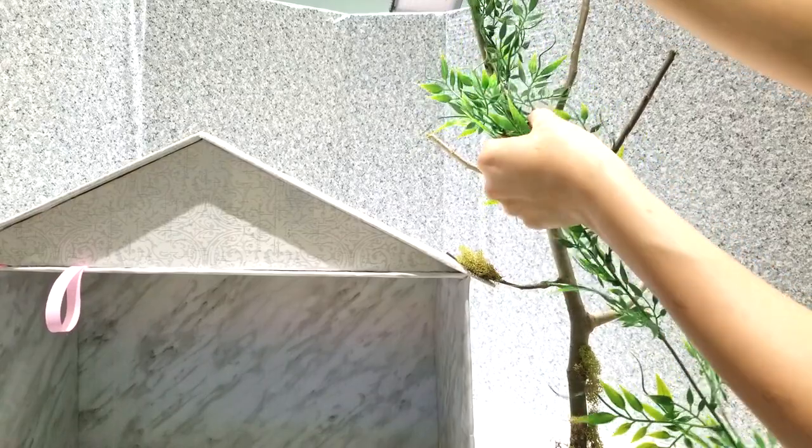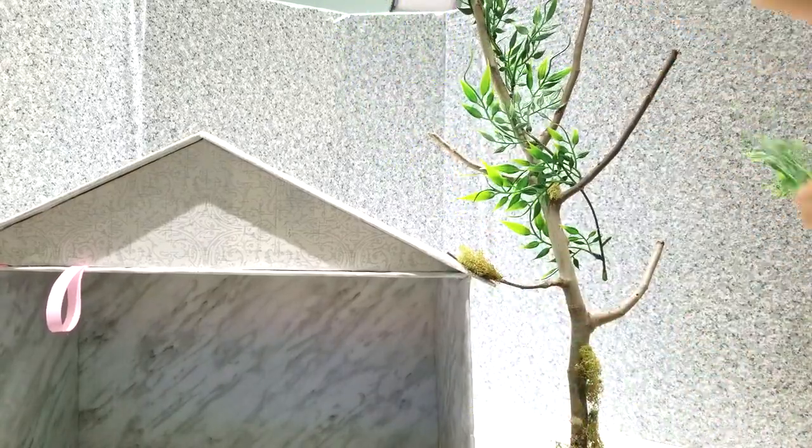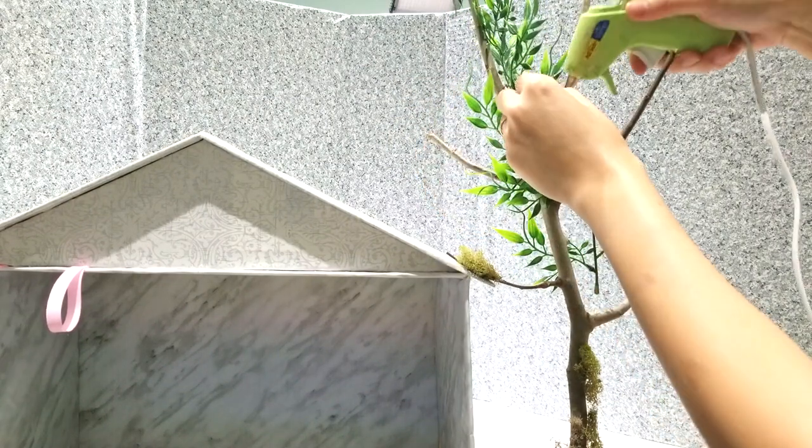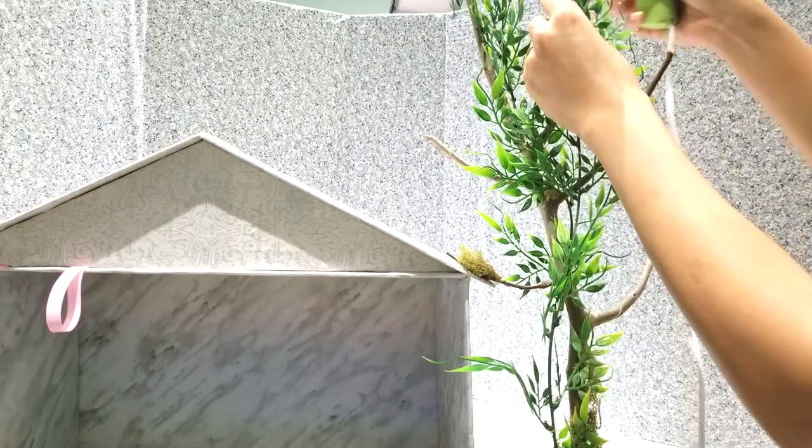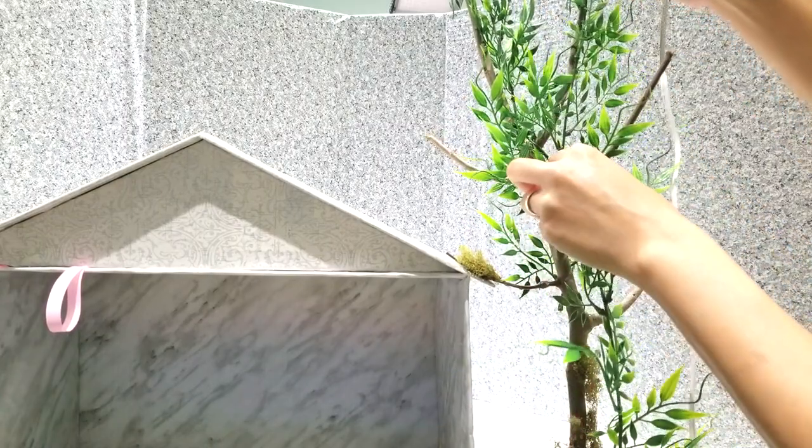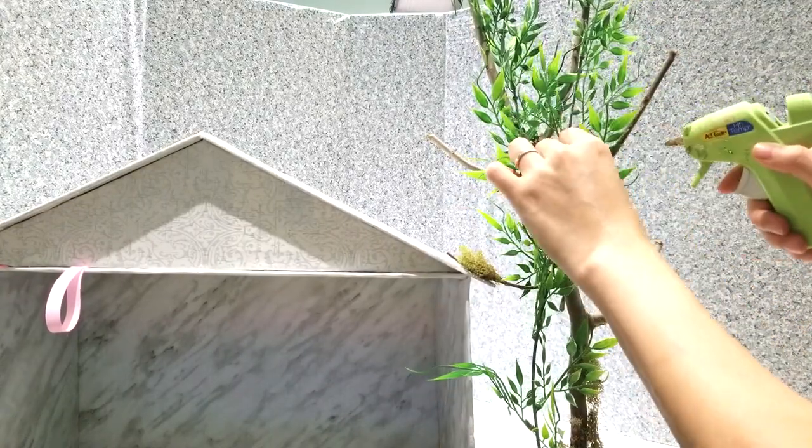We're almost there. All we have to do is wrap the leaves around the branches. I also add hot glue just to make sure that everything stays in place and I just try to make the tree to be as realistic as possible.